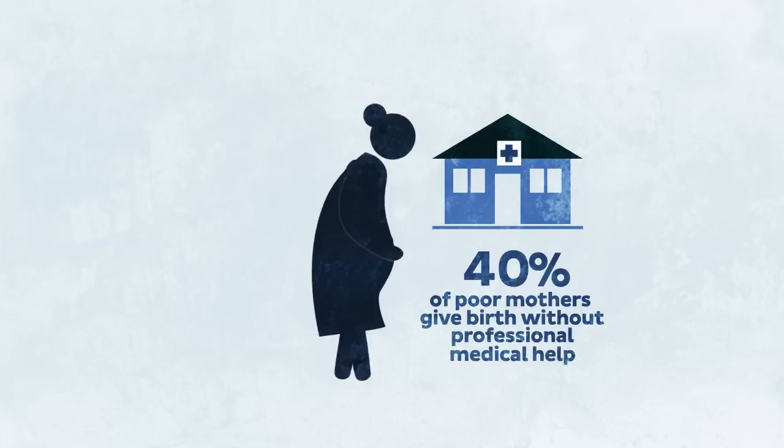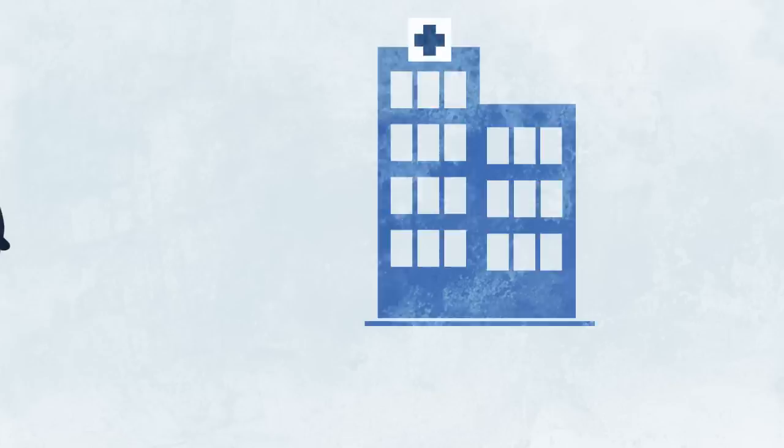Inequality divided these girls even before they were born. Putri's mother did not visit a formal health facility while she was pregnant and did not get the right nutrition. Because of this, Putri was born underweight. Dewi's mother, on the other hand, was able to visit her doctor regularly and get the right nutrition so that Dewi was born with a healthy weight.